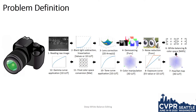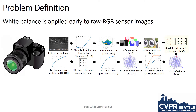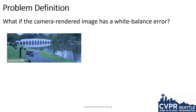When you take a photo, a number of processing steps are applied by the camera's ISP hardware to render the original raw sensor image to its final output image. One of the early steps in this color rendering pipeline is white balance, which is a per-channel scaling. If you get white balance incorrect at capture time, it's difficult to correct.